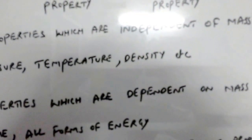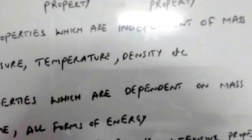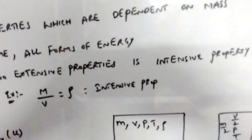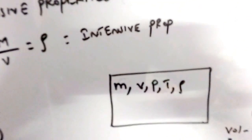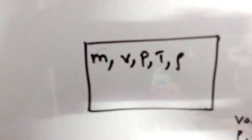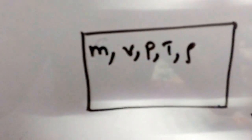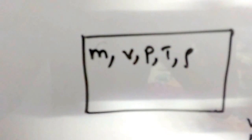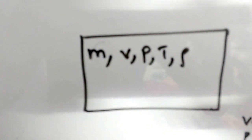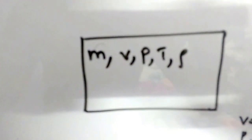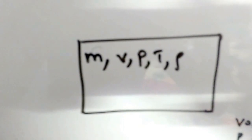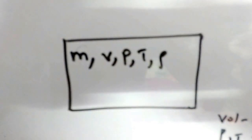To avoid confusion between intensive and extensive properties, consider a simple example. Take a gas in a container whose mass is M, volume is V, pressure is P, temperature is T, and density is rho. Now let's divide this rigid container into two spaces with an intermediate wall.